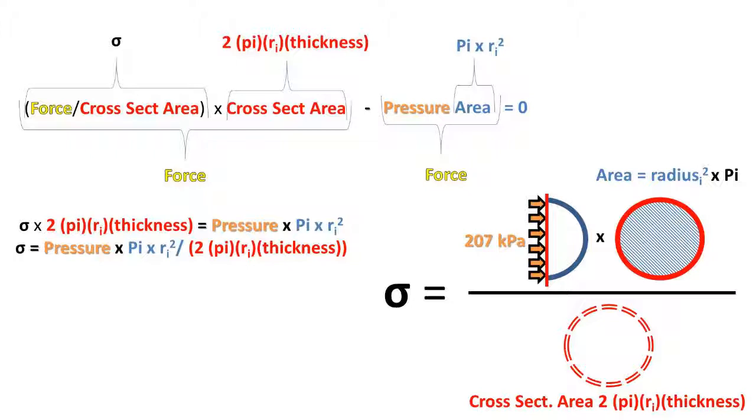Note, this is not the exact cross-sectional area, but it's pretty close and is commonly used when finding the stress of a thin-walled pressure vessel.